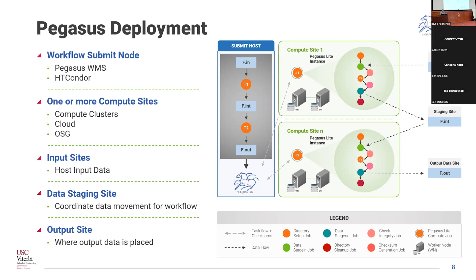Your data sets do not need to be available on the workflow submit node — they can be on input data sites spread all over. There's a data staging site which Pegasus uses to coordinate data movement for the workflow. For example, if you're running your workflows in the Amazon cloud, Pegasus will use Amazon S3 as a bucket to do this data staging coordination. Finally, the output site is where the output data products are placed. These are logical entities — depending upon your environment you could co-locate them. At its heart, it's a very flexible data model that allows users to run their workflows in a wide variety of environments.